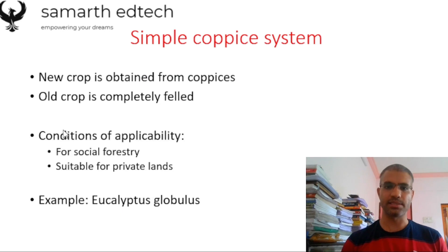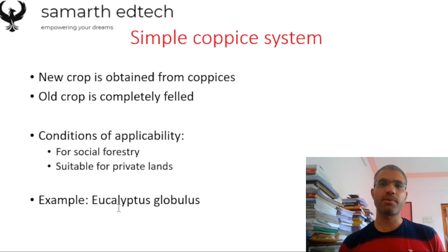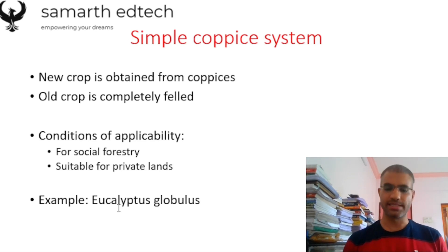The Simple Coppice System is generally used for social forestry or for private lands. The example is Eucalyptus globulus. Try to remember the examples because if you give examples in your answers, your answer will stand out from the rest of the candidates.